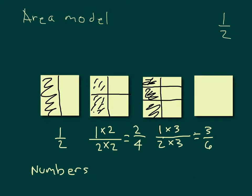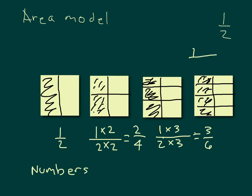In the last box, we again have 1 half, but this time we're going to put it into eighths. We would be looking at four of those eight parts to be equivalent to 1 half. What we did there is 1 times 4 in the numerator, and 2 times 4 in the denominator, to get 4 eighths. All of these fractions — 1 half, 2 fourths, 3 sixths, and 4 eighths — are equivalent fractions.